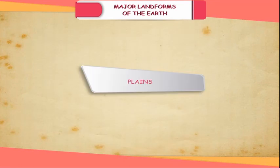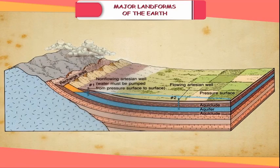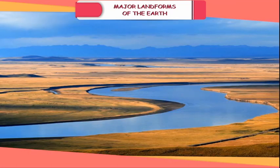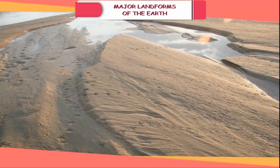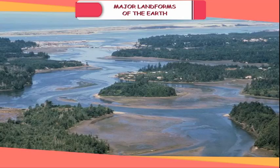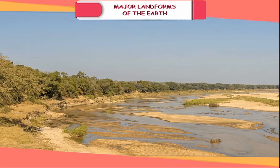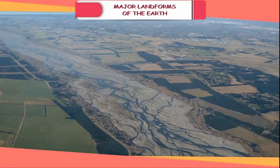Plains. The flat, low-lying area of land is called a plain. Most plains are formed by rivers and their tributaries. The rivers bring sand, silt and clay from higher elevations and deposit them at lower elevations. The plains formed by the depositional work of running water are called alluvial plains. The Indo-Gangetic Plain is an example of an alluvial plain.